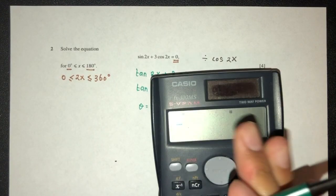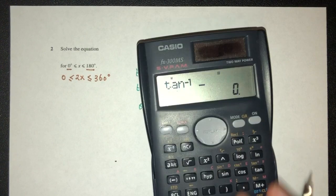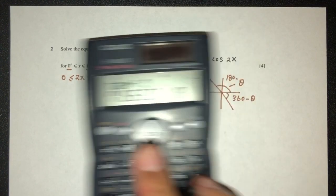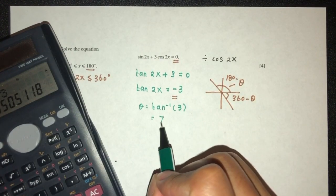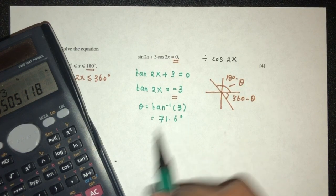So this is not the answer yet. Tan inverse of the positive value of 3 should be 71.6 degrees.